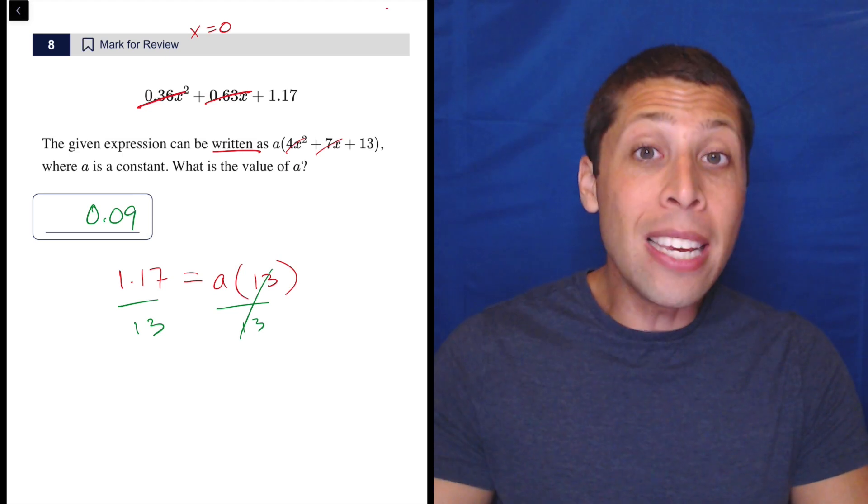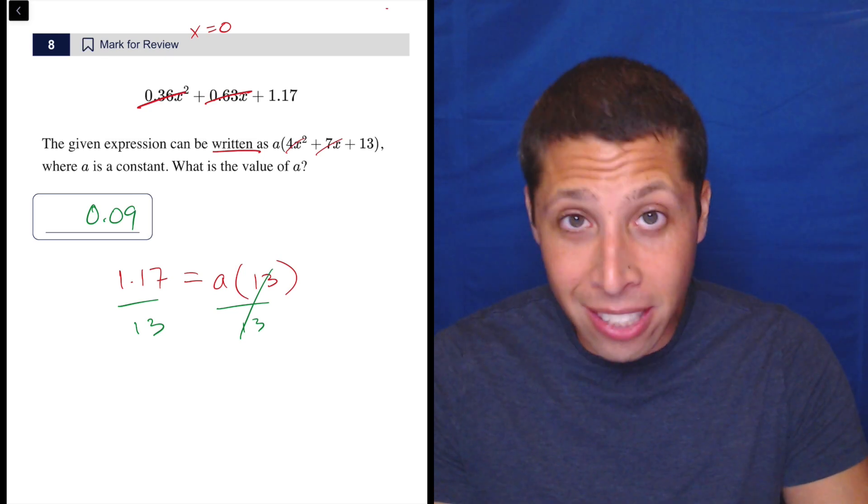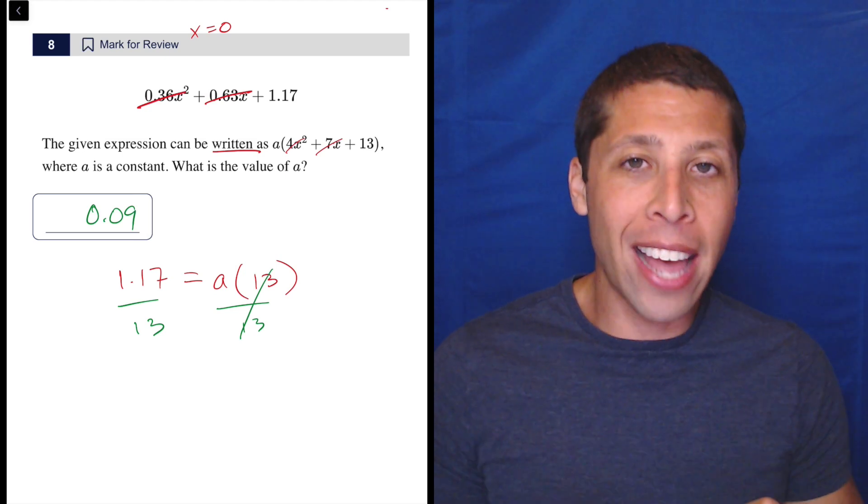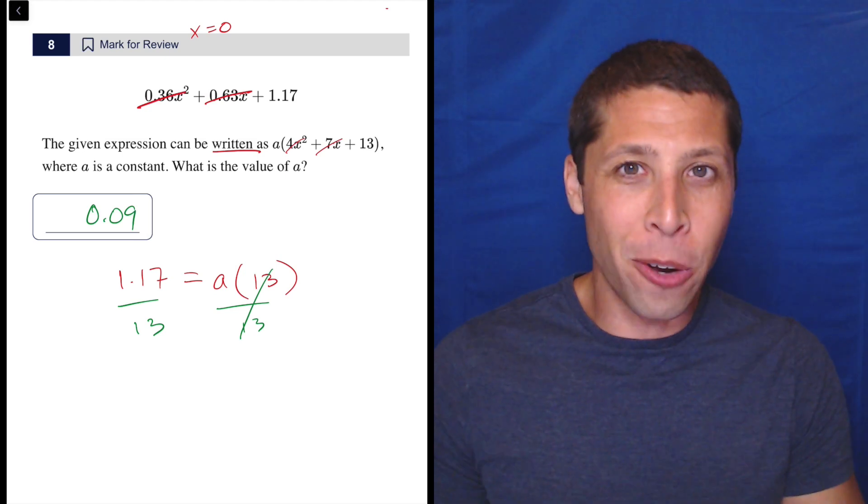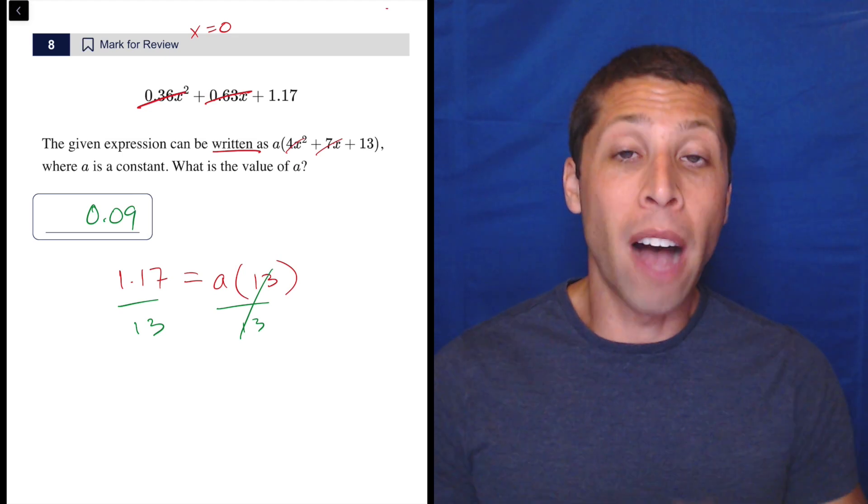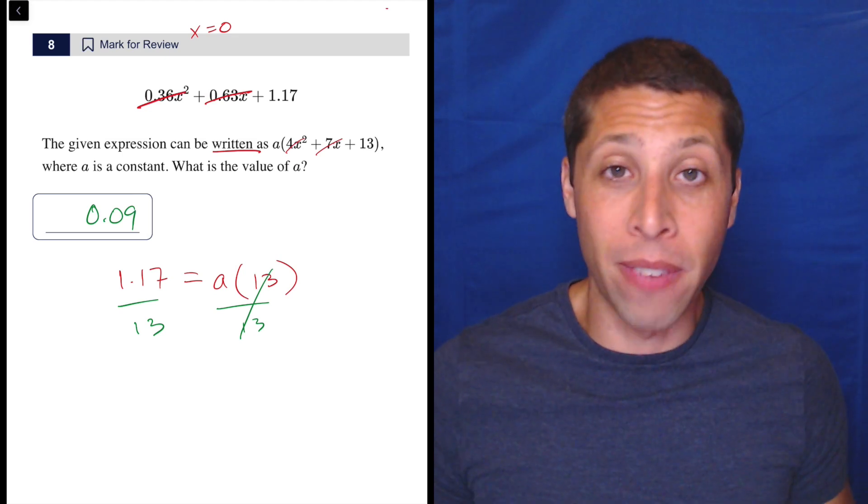Now, if you want, if you don't believe that this strategy works, pick another number. You can pick x equals 1. You can pick x equals 206 if you want. It doesn't matter. It will still work out because these are equivalent expressions. So if x is something, it's something for both sides of the equation. That's the whole point of an equivalent expression - they're equivalent no matter what the value of the variable is.